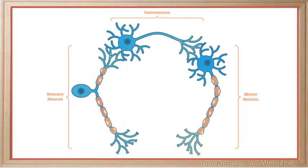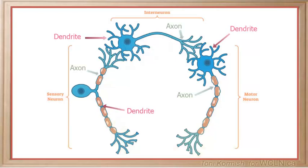Structurally, all neurons have dendrites, axons, and a cell body, and all neurons can be myelinated.